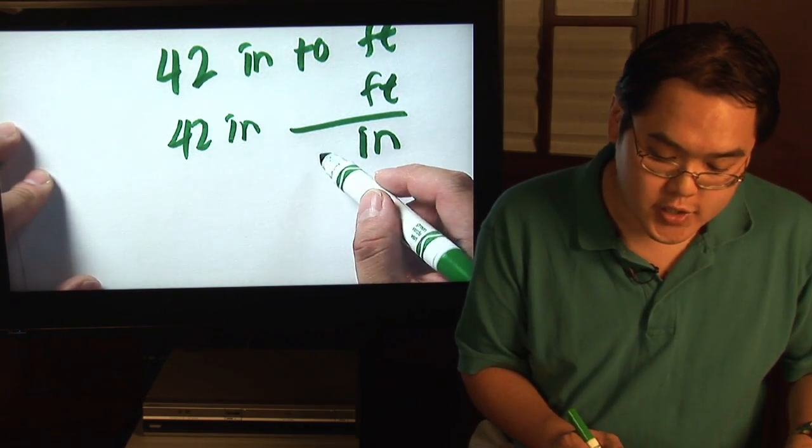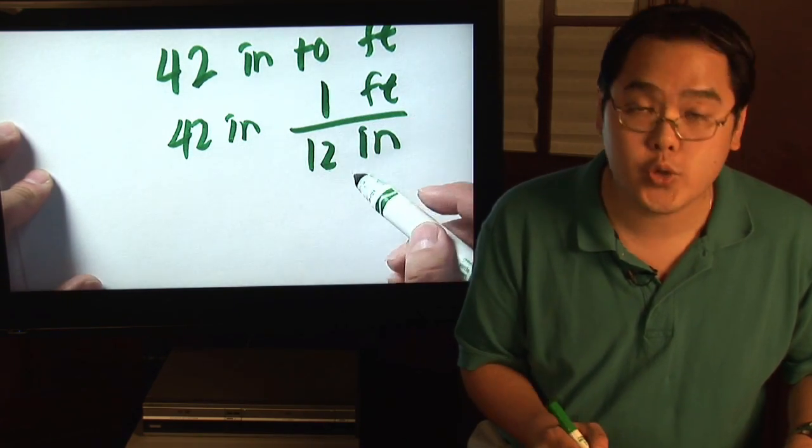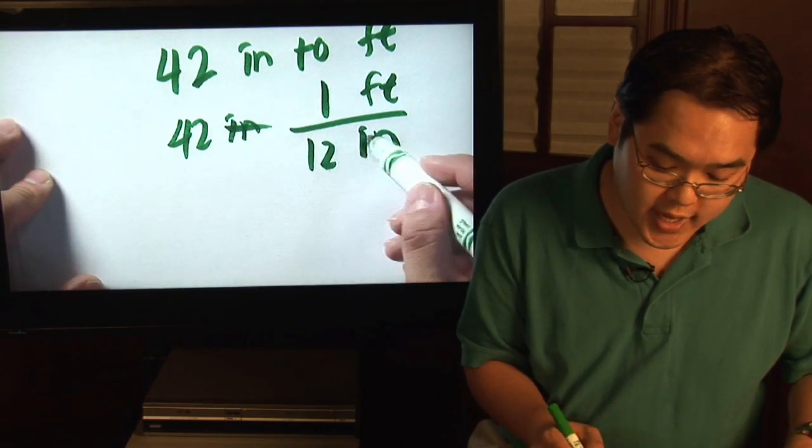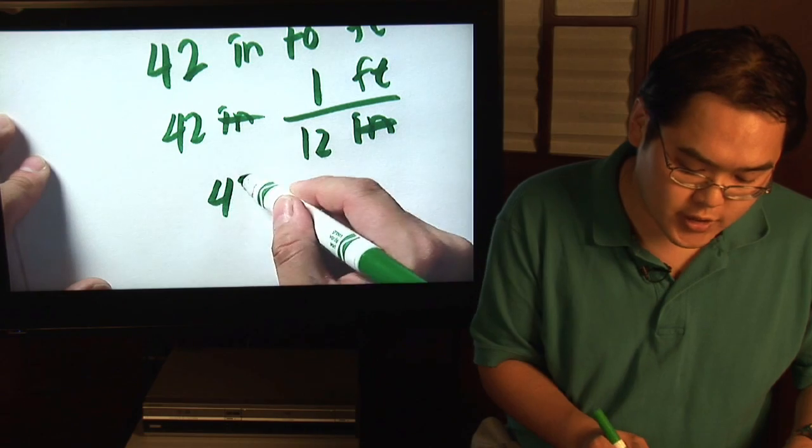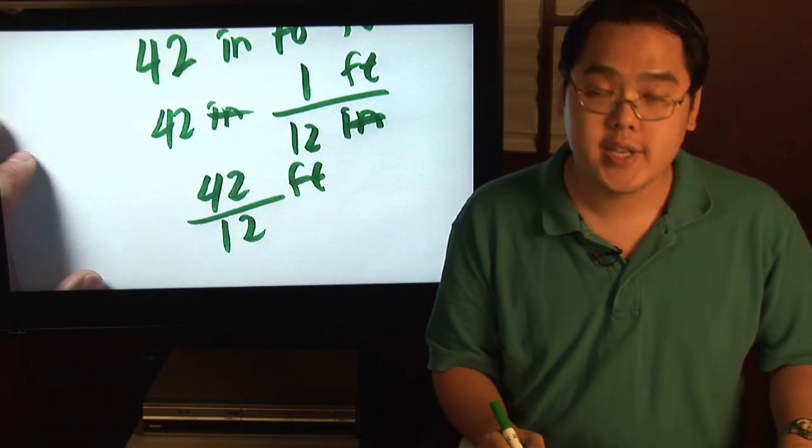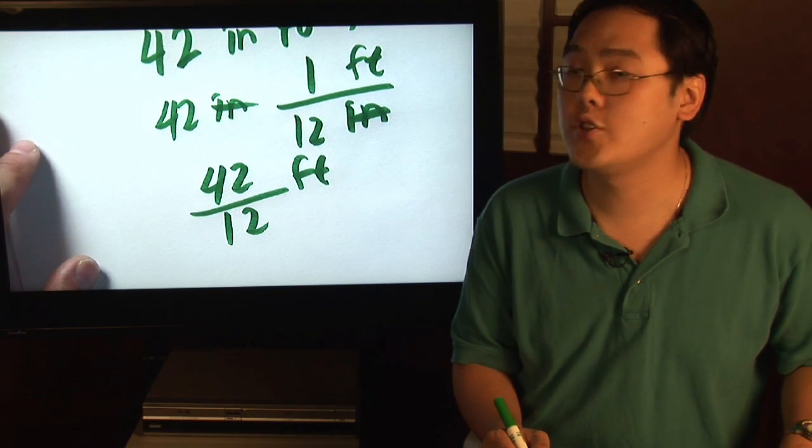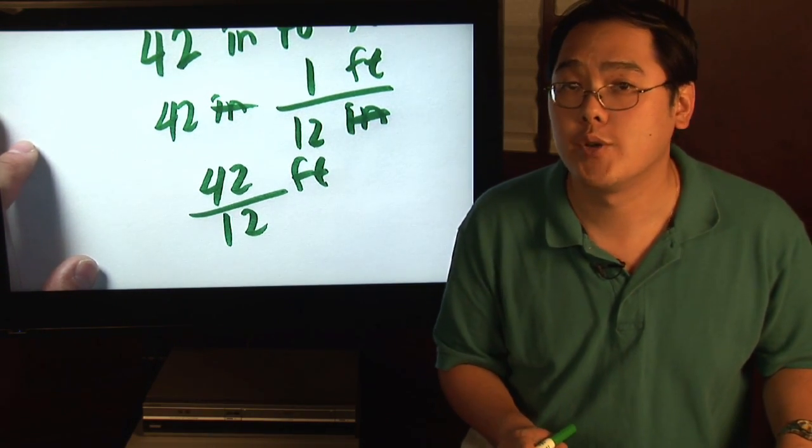So, since it's 12 inches and 1 foot, 12 goes with the inches, 1 goes with the foot. Now the inches will cancel, then you just literally multiply across. 42 times 1 is going to be 42 and then over 12. So 42 inches to feet is 42 over 12 feet, and you can reduce the fractions fairly easily. So I'll let you do that.